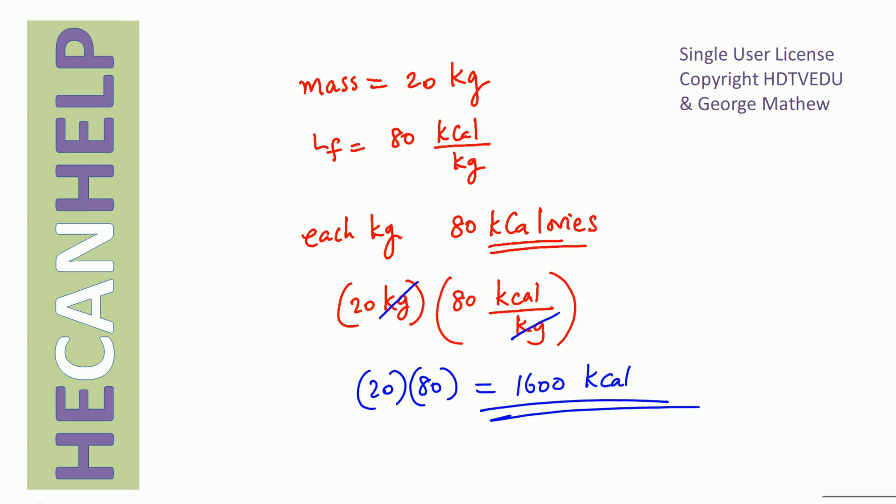What is the latent heat of fusion of ice? It is the amount of heat that you have to add to convert 1 kg of ice at 0 degree Celsius (273.15 Kelvin) to water at 0 degree Celsius (273.15 Kelvin), without a change of temperature, but with a phase change — going from solid ice to liquid water.